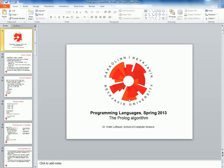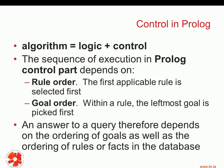Hello everyone. In this lecture we're going to conclude our discussion on Prolog and discuss in some detail the underlying Prolog algorithm. Recall from our first discussion on logic programming, we said that an algorithm consists of a logic part and a control part. The logic programmer takes care of the logic part, whereas the abstract machine — the Prolog algorithm — takes care of the control part. That's what we're going to look at today: the control part.